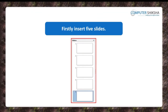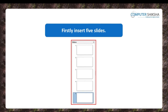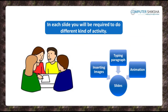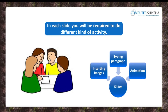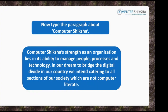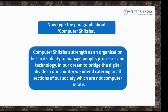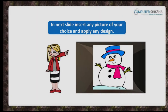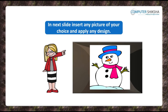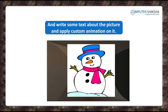Firstly, go ahead and insert five slides and in each of these slides, you will be required to do different kinds of work. Now, type the paragraph being shown to you about Computer Shiksha in the first slide. In the next slide, insert a picture of your choice and apply a design on it. Also, remember to write some text about the picture on the slide and apply custom animation on it.